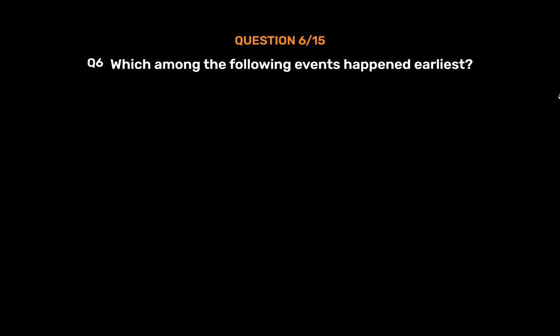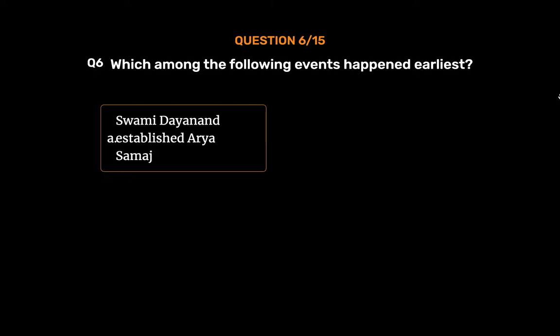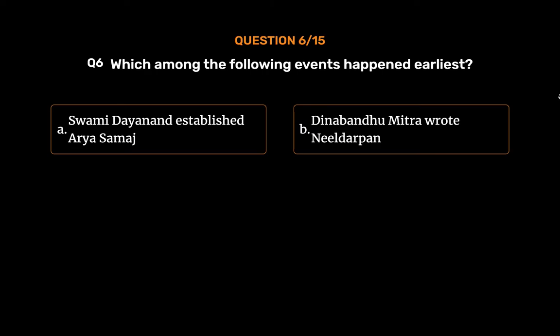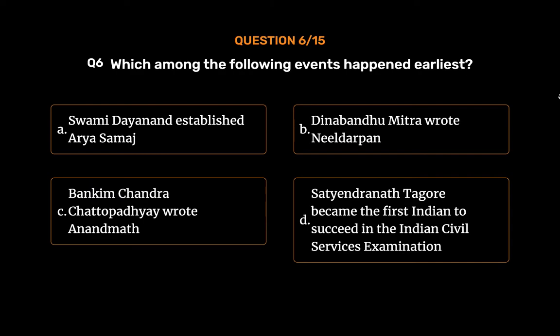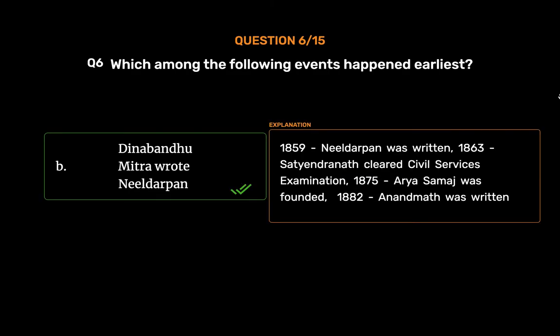Question No. 6. Which among the following events happened earliest? Option A: Swami Dayanand established Arya Samaj. Option B: Deenbandhu Mitra wrote Neel Darpan. Option C: Bankim Chandra Chattopadhyay wrote Anandamath. Option D: Satyendranath Tagore became the first Indian to succeed in the Indian Civil Services examination. The correct answer is Option B. Neel Darpan was written in 1859. Satyendranath cleared the civil services examination in 1863. Arya Samaj was founded in 1875. Anandamath was written in 1882.